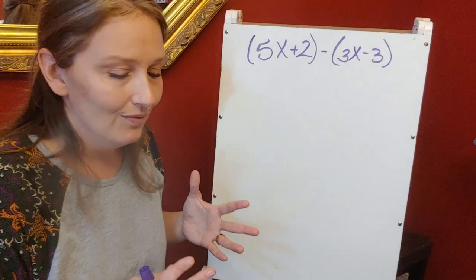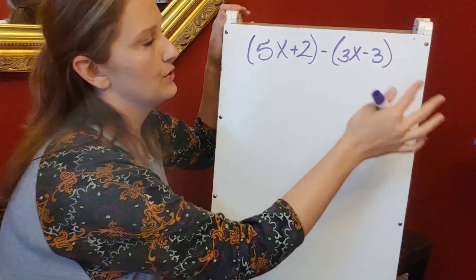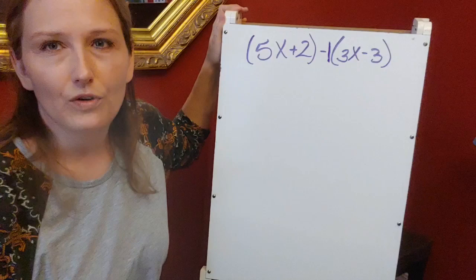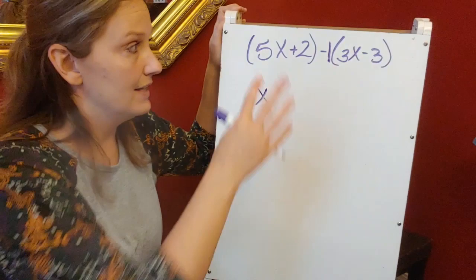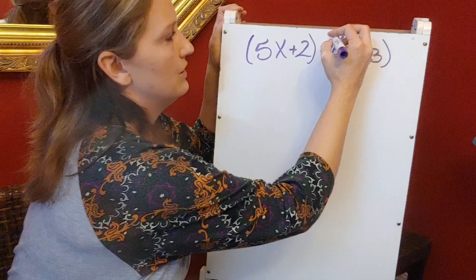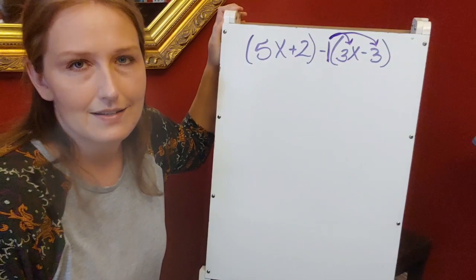In this expression I'm subtracting them. I know that there's a 1 there. It's not explicit, but we know that whenever there's not a number, like here on this x, we know that is 1x. Same thing with subtracting these. Whenever you're subtracting them, we have to be sure that we're distributing that negative through that second set of parentheses.